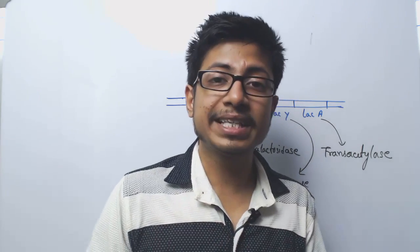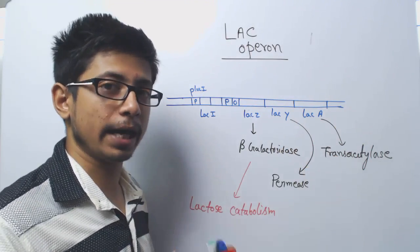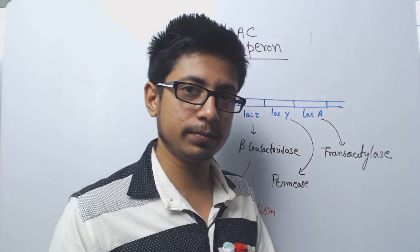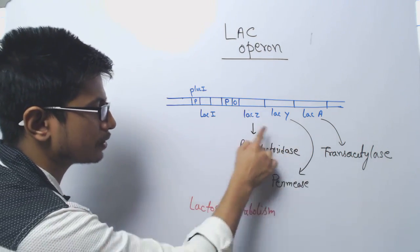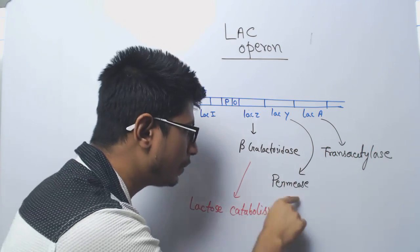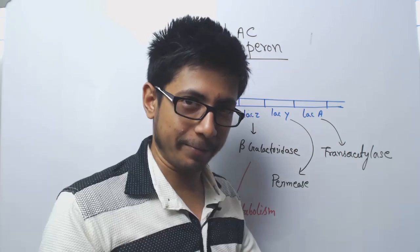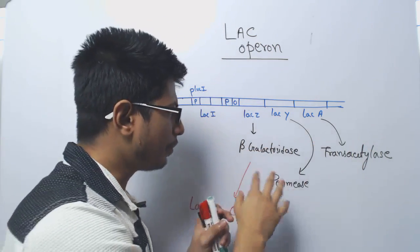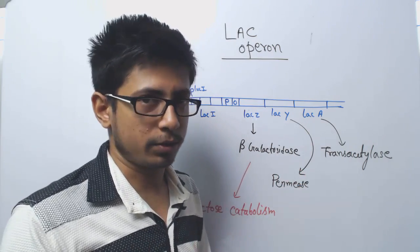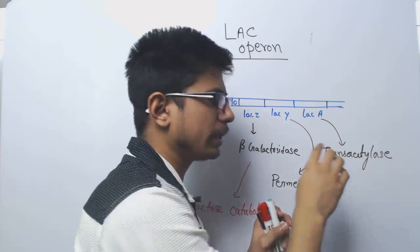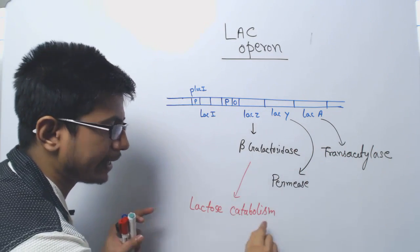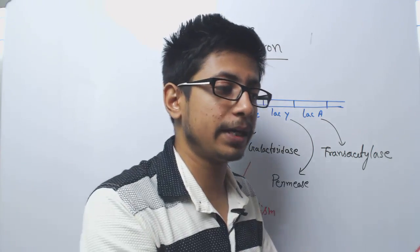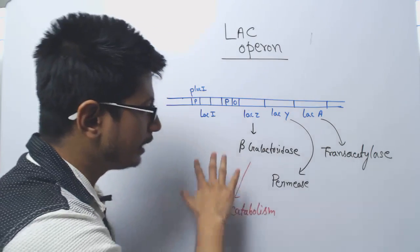Lactose is a sugar, so it can act as an energy source for bacteria. In E. coli, lactose can be taken up and broken down to generate energy. For breaking down lactose, they need beta-galactosidase. Permease is a membrane channel protein required to take up lactose from the environment. Transacetylase also helps somewhat in the uptake of lactose, though its role is not completely clear yet. Once lactose is inside the cell, beta-galactosidase breaks it down to generate energy.